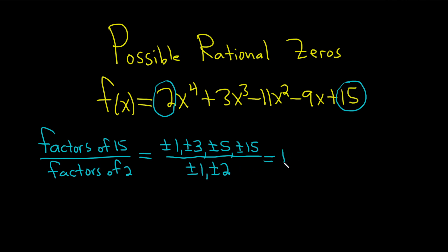So 1 over 1 is 1. Don't forget the plus or minus. And then 1 over 2 is 1 over 2. So we're done with the 1.